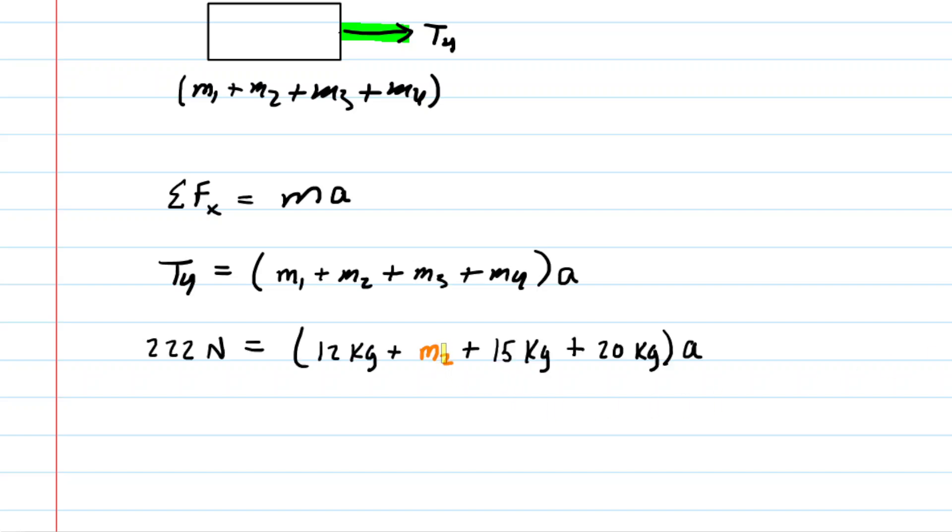Again, we are looking for m2, so we've kind of highlighted that in an orange color. We could go ahead and simplify this. We could add the masses, the known masses, inside the parentheses.